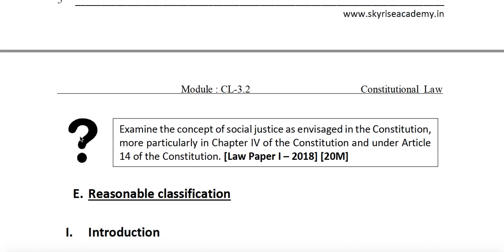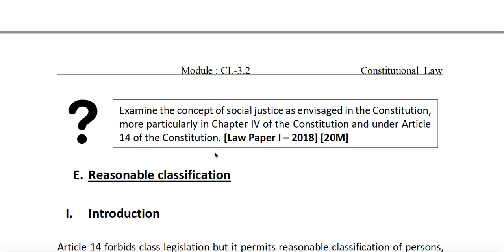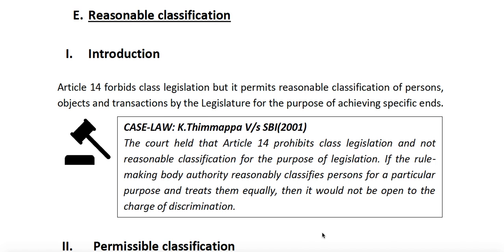Courts have evolved that if classification is based on something reasonable and justifies the test of reasonability, it shall not be regarded as discriminatory. Here was a previous question for law optional: 'Examine the concept of social justice as envisaged in the constitution.' You need to mention both concepts and case laws, which is why conceptual clarity is important to score more marks. Article 14 forbids class legislation but permits reasonable classification to achieve certain specific ends.